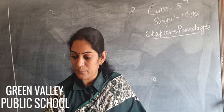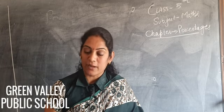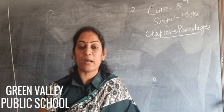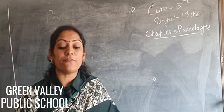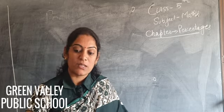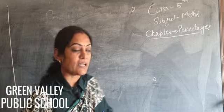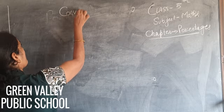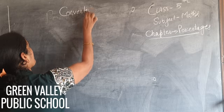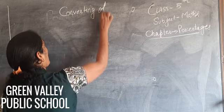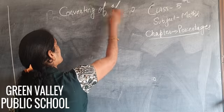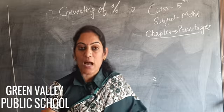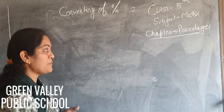On page number 75, exercise first — this is about converting fractions into percentage. We use the symbolic form for converting to percentage. The first question says: express each of the following fractions as an equivalent fraction.